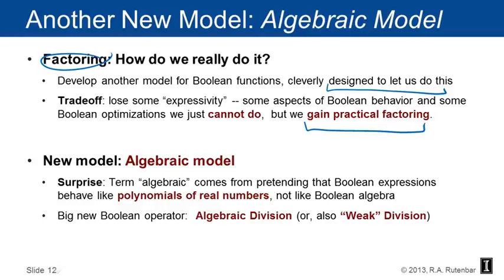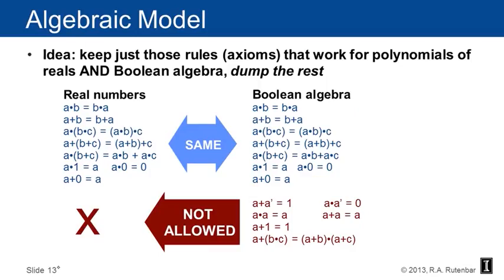Not perfect. There's some things that we agree to give up, but we're going to get practical factoring. The model's called the algebraic model. And the term algebraic comes from pretending that the Boolean expressions behave like polynomials of real numbers, not like Boolean algebra. And we're going to end up with a new Boolean operator which is called algebraic division because it's using the algebraic model. It's also called weak division because of this loss of expressivity thing. There's some things that we're just unable to do. It's not fully Boolean kind of a model. It turns out that's a surprisingly good trade-off.